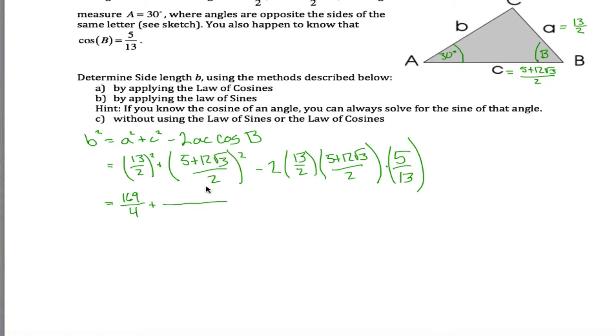Thirteen halves squared is the same as 13 squared over 2 squared. 13 squared is 169. So I got 169 over 4 plus, well let's see. I need to square the top and square the bottom. Squaring the bottom is easy. That's just 4. Squaring the top is kind of a mess. You'll have to think FOIL. So 5 times 5 would give me 25. 5 times 12 root 3 is 60 root 3, but I have two of those, kind of the outside and the inside terms. So that gives me 120 root 3.